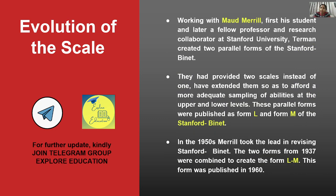How did this scale evolve from 1916 to 2003? Working with Maud Merrill — first his student and later a fellow professor and research collaborator at Stanford University — Terman created two parallel forms of the Stanford scale. They provided two scales instead of one, extending them to afford more adequate sampling of abilities. The names of these two forms were L and M — L for Lewis Terman and M for Merrill.